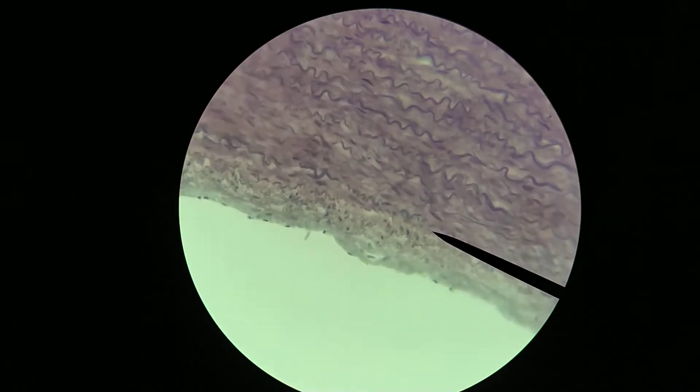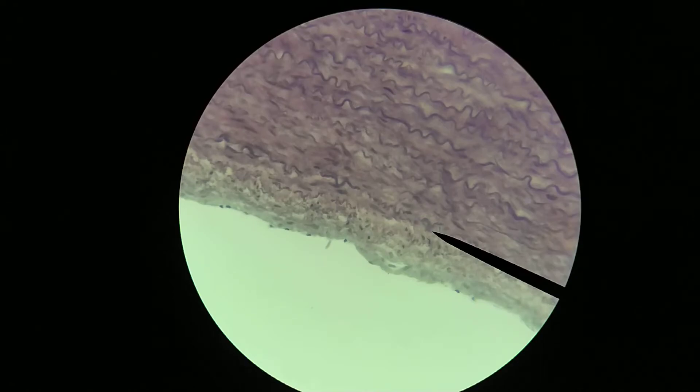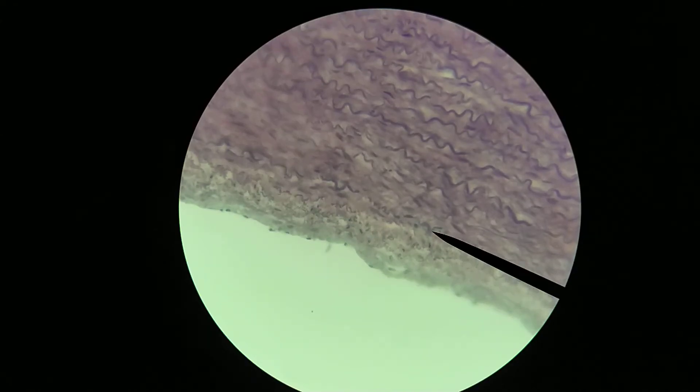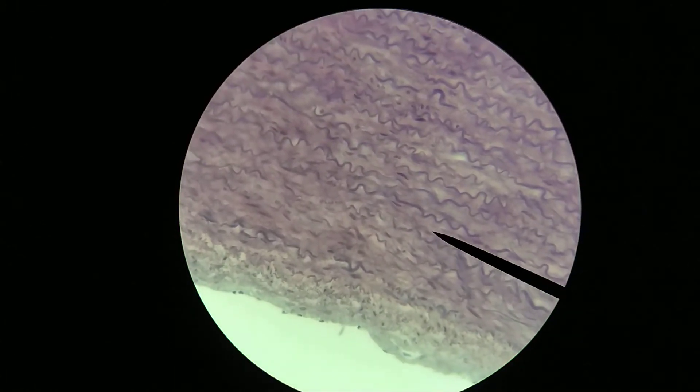And then we start to notice kind of a fairly intensely stained, wavy band right here. So this right here is that internal elastic membrane. And you'll notice the same sort of pattern repeating as we go deeper and deeper into the blood vessel.